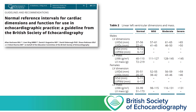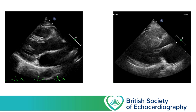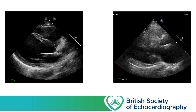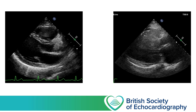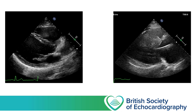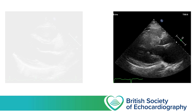Whilst it may not be necessary to measure LV wall thickness, it is important for the Level 1 sonographer to be able to recognise left ventricular hypertrophy, especially when it's severe, as in this case on the right from a patient with hypertrophic cardiomyopathy. As well as LVH being a clue to underlying heart disease, when severe it can be haemodynamically significant, especially in patients with hypovolaemia, where obstruction of flow through the left ventricular outflow tract can occur. We'll touch on this again in the lecture on valvular heart disease.